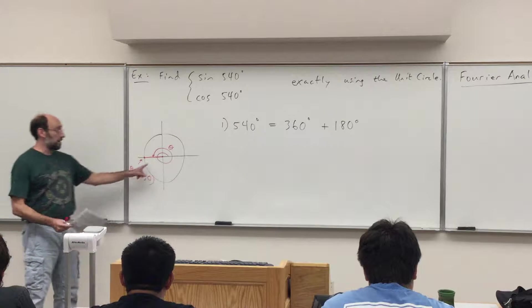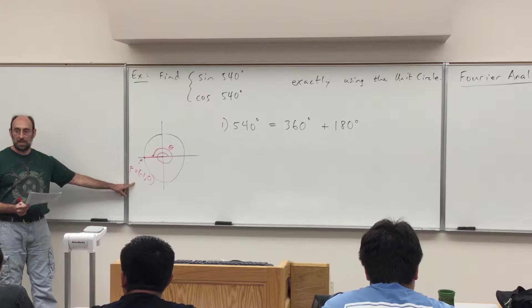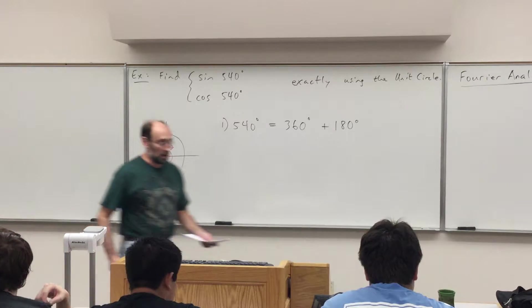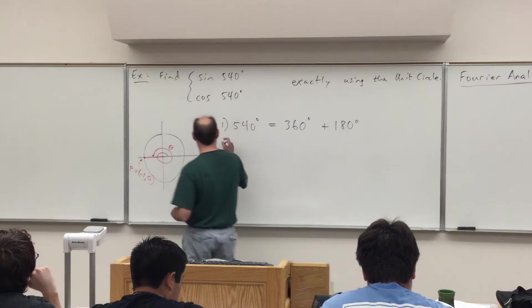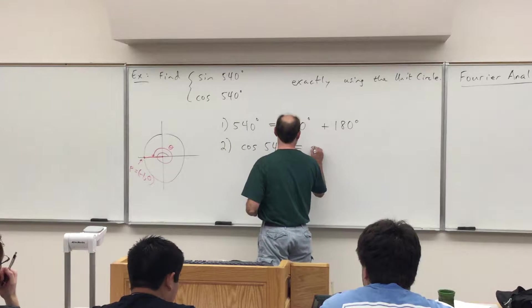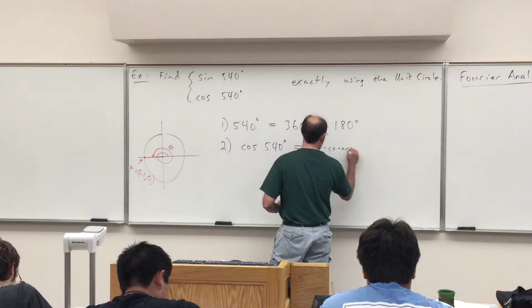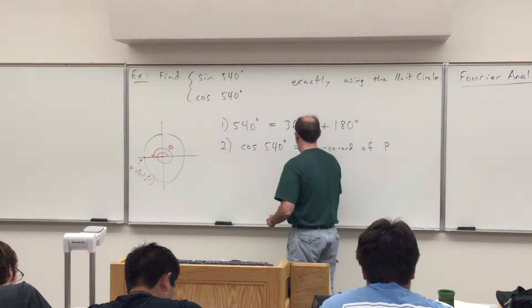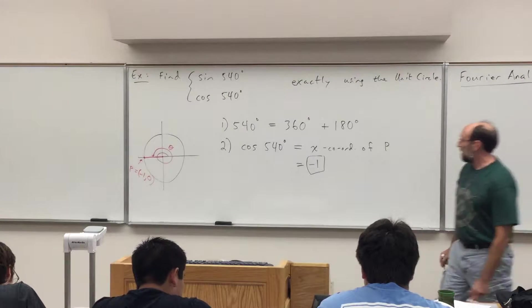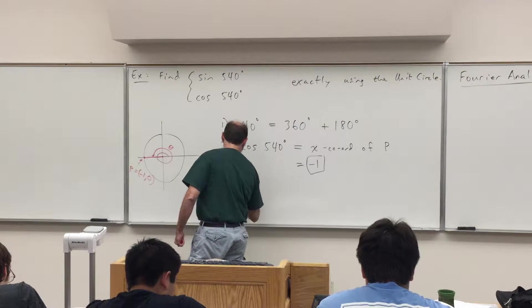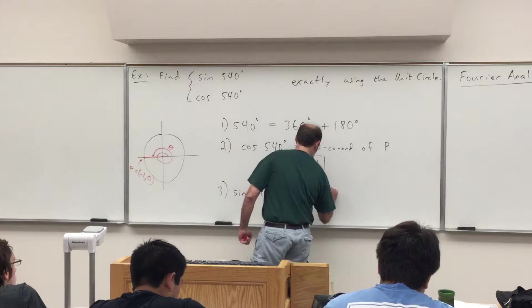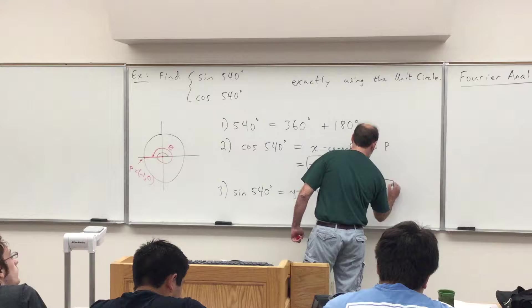So what point is this on the unit circle — a circle centered at the origin with radius 1? P equals negative 1, 0. The cosine of theta is the x-coordinate of P on the unit circle. The sine of theta is the y-coordinate of P. So the cosine of 540 degrees equals negative 1, and the sine of 540 degrees equals 0.